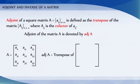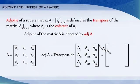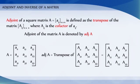Then adj A = Transpose of [A11, A12, A13; A21, A22, A23; A31, A32, A33], which is equal to [A11, A21, A31; A12, A22, A32; A13, A23, A33].